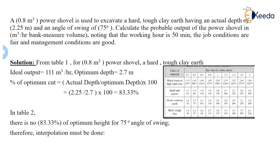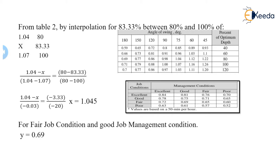We will find the interpolation value of x by taking the value for 83.33% and the angle of swing of 75 degrees. From Table 2, here we can see the 83.33 value comes between 80 and 100, while the angle of swing is 75. So the related values are 1.04 and 1.07.